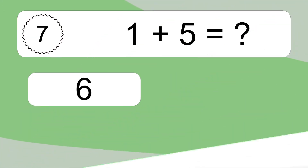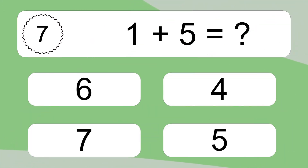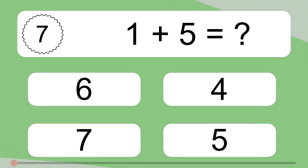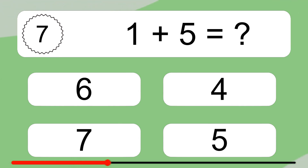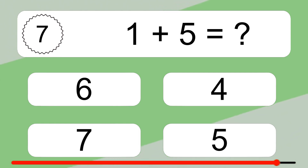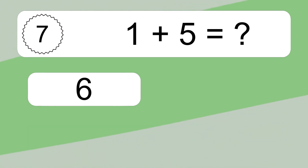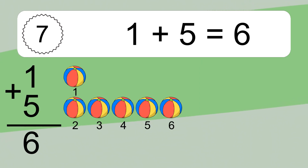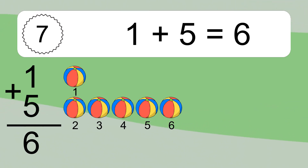1 plus 5 equals what? 1 plus 5 equals 6. Let's count it: 1, 2, 3, 4, 5, 6.